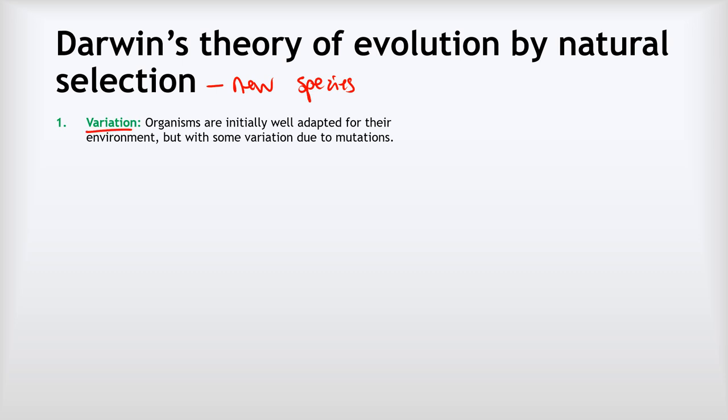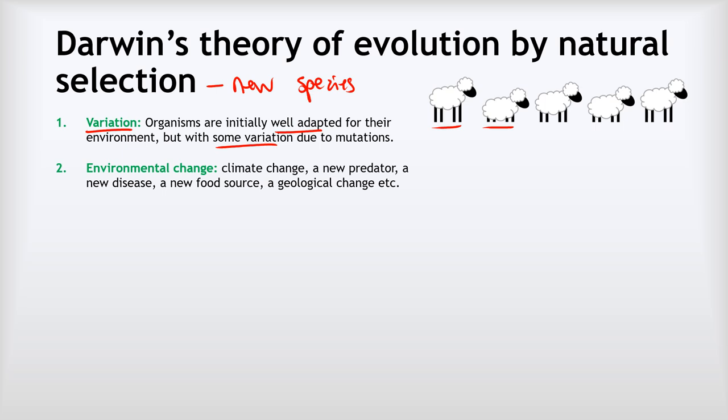It starts with variation. Organisms are well adapted—they have suitable features for their environment—but there's variation, so no two individuals are identical. Imagine we had some wild sheep. They're all well adapted to where they live, but there is variation. The variation we'll look at is their height. Some are really tall and some have tiny stumpy legs. Next, there's environmental change. That could be climate change, a new predator, a new disease, a new food source, or a geological change like a volcano. In our sheep example, a new predator moves into the area that only eats animals less than one meter tall, below this dotted orange line.